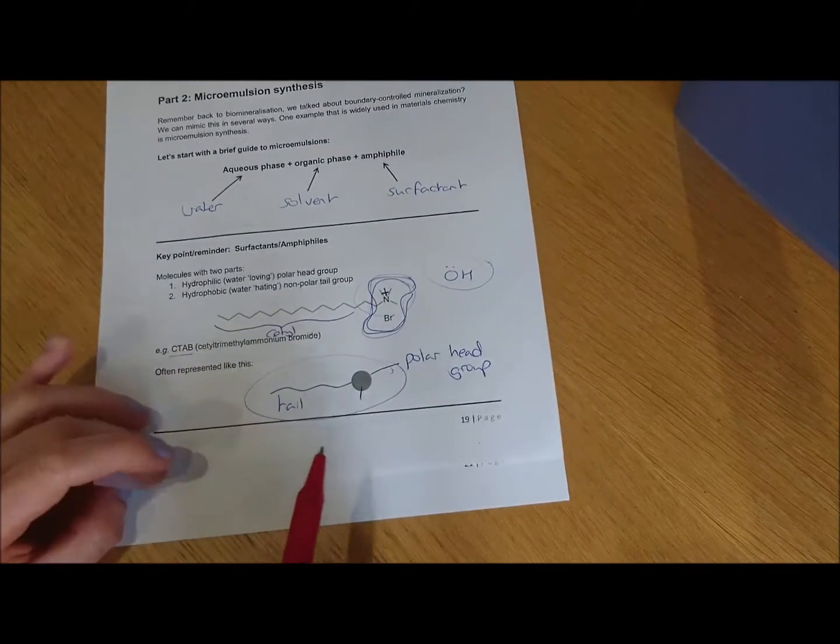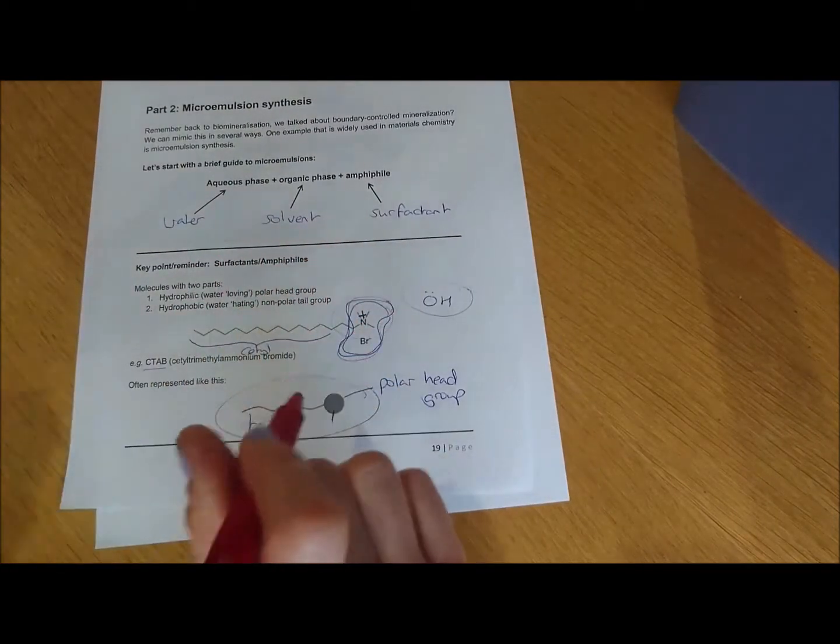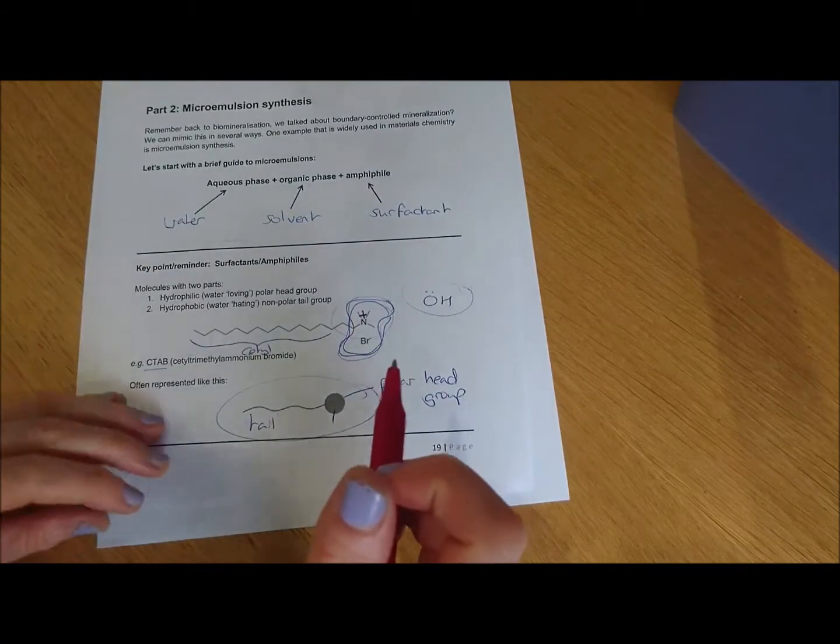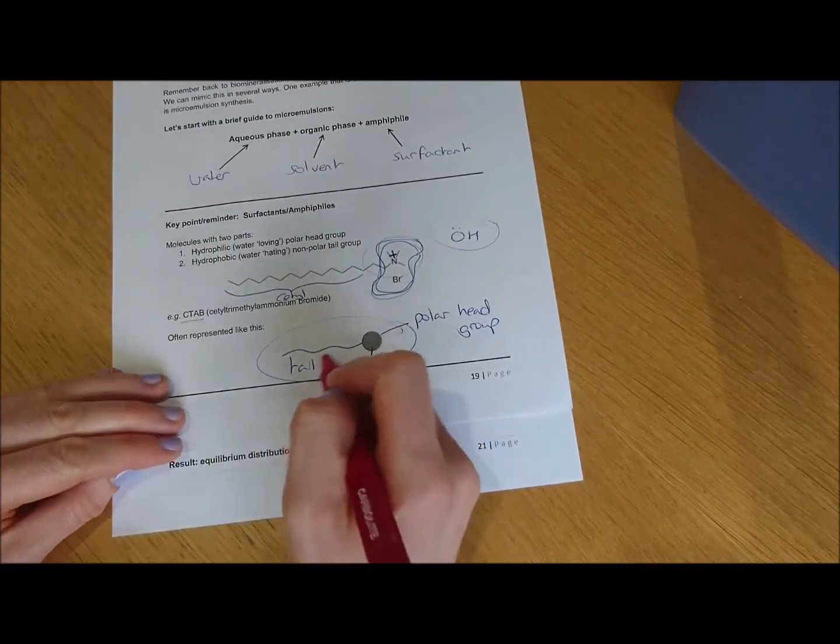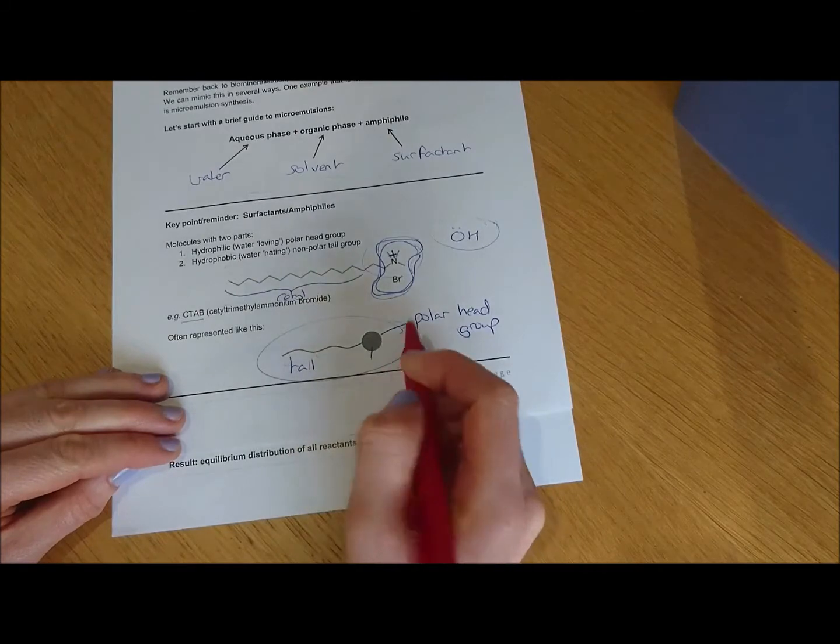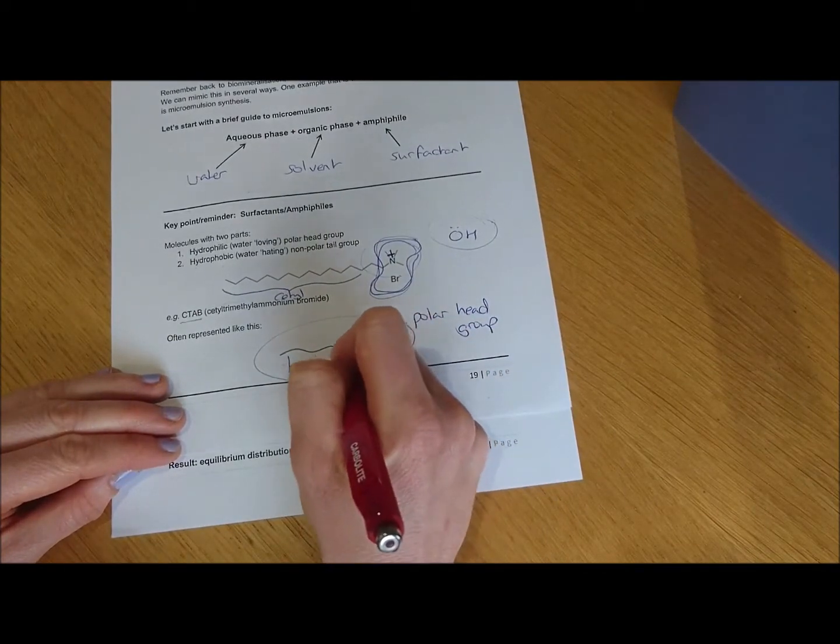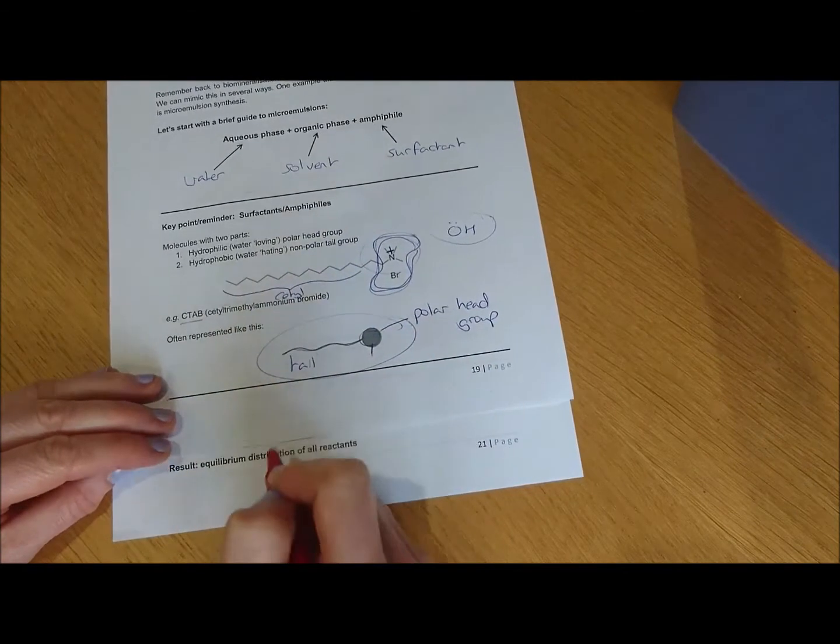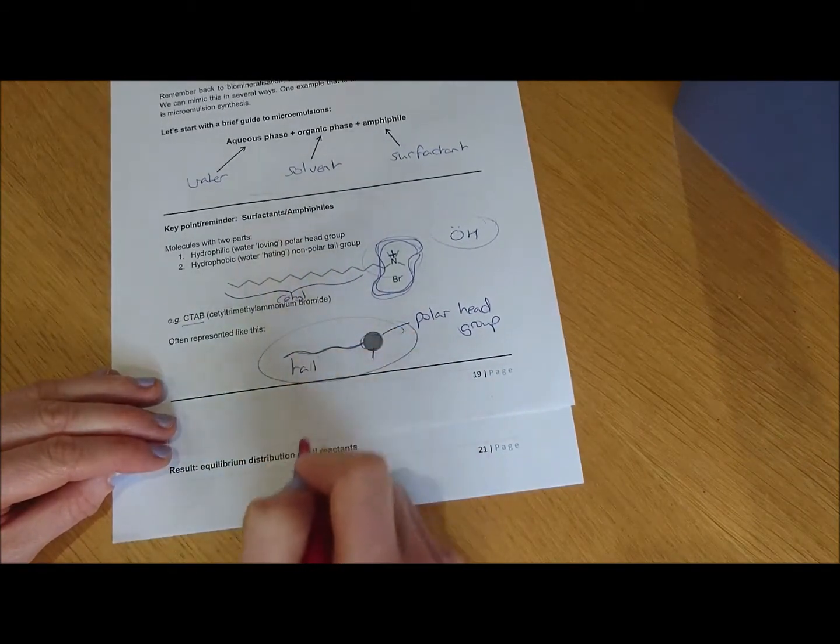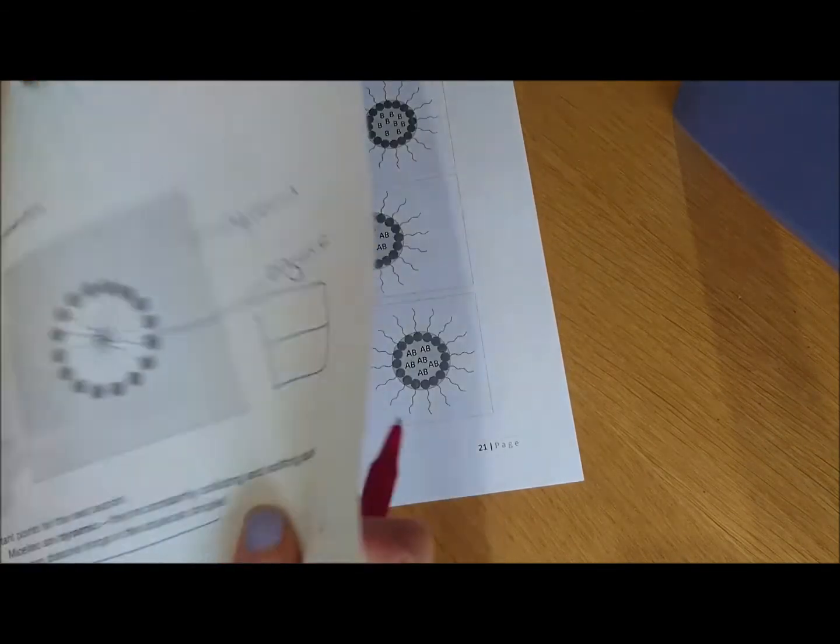When we actually look at schematics, and when you look in papers or textbooks about emulsions and microemulsions, you'll often see the surfactant molecules represented like this, where you've got your polar head group on the end, and then just the tail group represented as a line. So that's your non-polar tail group of the surfactant.